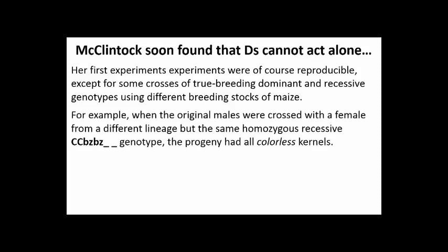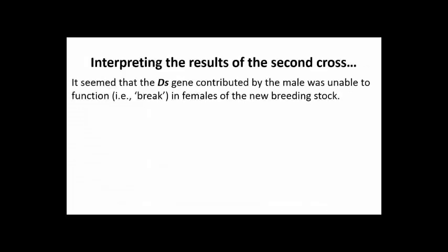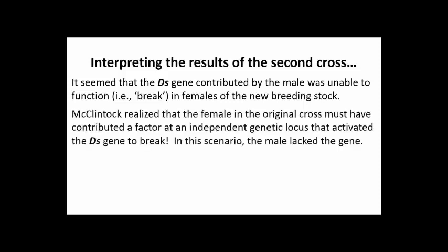They were all colorless — as if the ds element linked to the c' allele from the male was, on its own, unable to cause a chromosomal break. McClintock reasoned that this second female strain lacked a gene that the females in her original cross did contain. The ds gene apparently needed the help of this other gene in order to break. This gene was present in the original female strain, which allowed the dissociation phenomenon, but was missing in the new female strain.